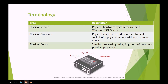Some terminology you are going to need to know as we go through this course. A physical server is the actual server running Windows and SQL Server on it — it's a physical machine. The physical processor is the chip inside of the physical server that may have one or more cores. And then the physical cores are the smaller units inside of the physical processor, and they are usually grouped in two.